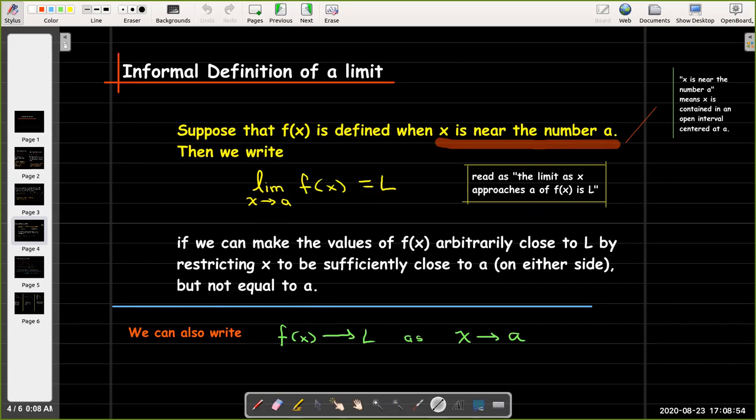So let's look at an informal definition. Suppose I have a function f. Now this is a different f from the f that we were looking at in the tangent line problem. This is just some generic general f. And suppose that it's defined when x is near the number a, we say that the limit as x approaches a of f of x equals L,